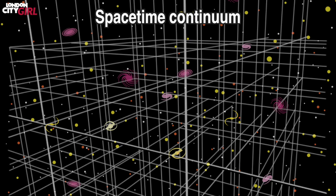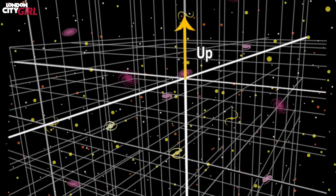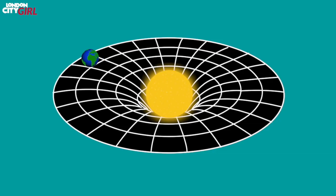Space-time incorporates the three dimensions of space—up and down, left and right, and back and forth—and the fourth dimension of time. Matter and energy can warp space-time, and this gives rise to the phenomena of gravity.